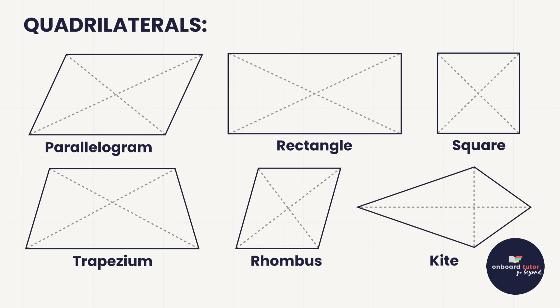A parallelogram, rectangle, square, trapezium, rhombus, and kite — and there are certain properties we need to know about each of them. I know it can feel quite overwhelming to think you need to learn so many properties about so many different shapes, so I like to break it down and ask: what do I know about the sides, what do I know about the angles, and what do I know about the diagonals? Let's look at that for each of these six shapes to put together a helpful summary.